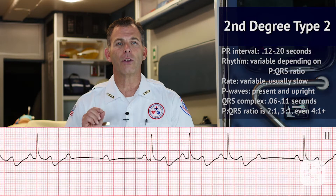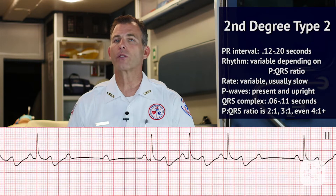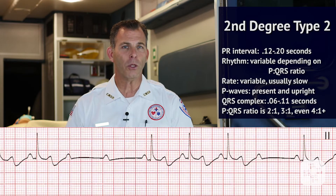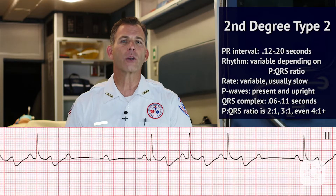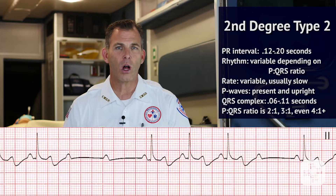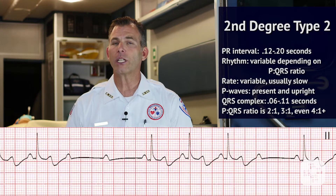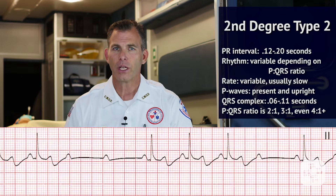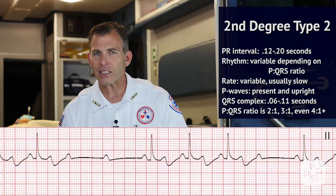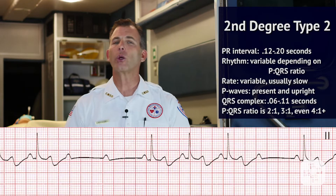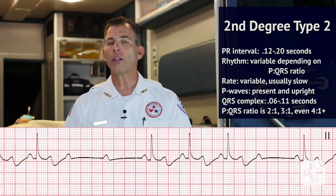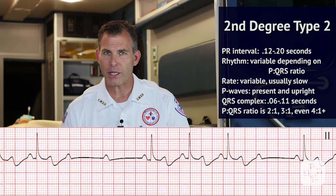With Mobitz Type 2 heart block, the rhythm is variable depending on the P to QRS ratio. The rate is variable but will usually be slow. P waves are present and upright, while the P to R interval will be between 0.12 and 0.20 seconds for normally conducted complexes. The QRS complex is 0.06 to 0.11 seconds, while the P wave to QRS ratio is variable and can be seen as 2 to 1, 3 to 1, or even as much as 4 to 1 and beyond.